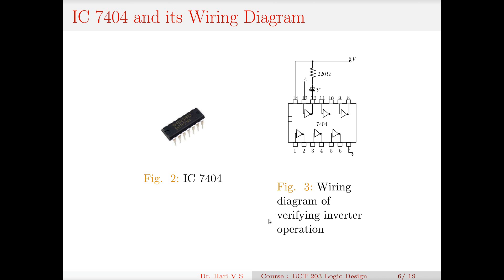IC 7404 is used as a popular TTL-type inverter. The internal diagram has 6 inverters. Pin 1 is an input; there are 6 gates in this IC, each comprised of about 4 or 5 transistors. This is basically a medium-scale integration type chip — with about 5 transistors per gate and 6 gates, there are around 30 transistors inside this circuitry.